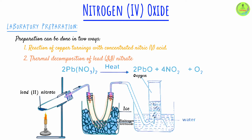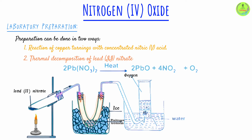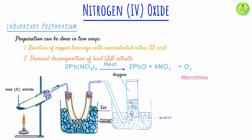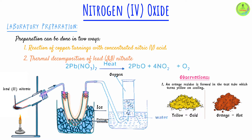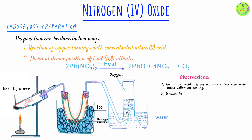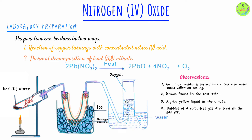Let's summarize the observations. There are four observations. In the test tube: first, you observe an orange residue which turns yellow on cooling — because lead(II) oxide is yellow when cool but orange when hot. Second, you observe brown fumes of nitrogen dioxide in the test tube. In the U-tube: you see a pale yellow liquid forming, which is dinitrogen tetroxide (N₂O₄). In the gas jar where oxygen is being collected, you observe bubbles of a colorless gas.